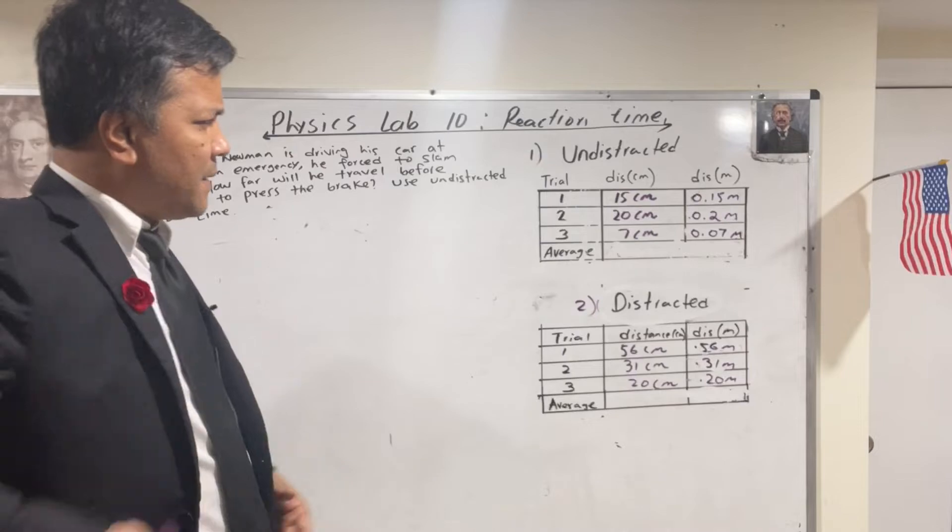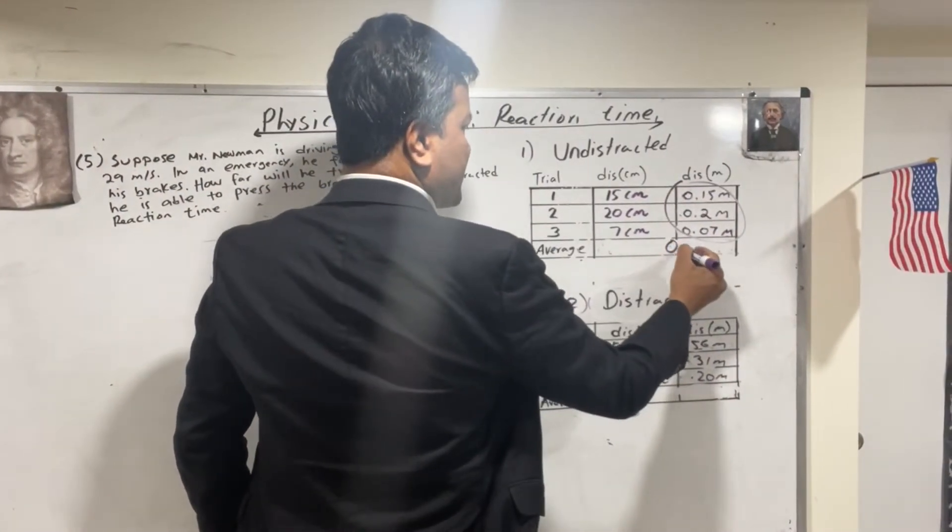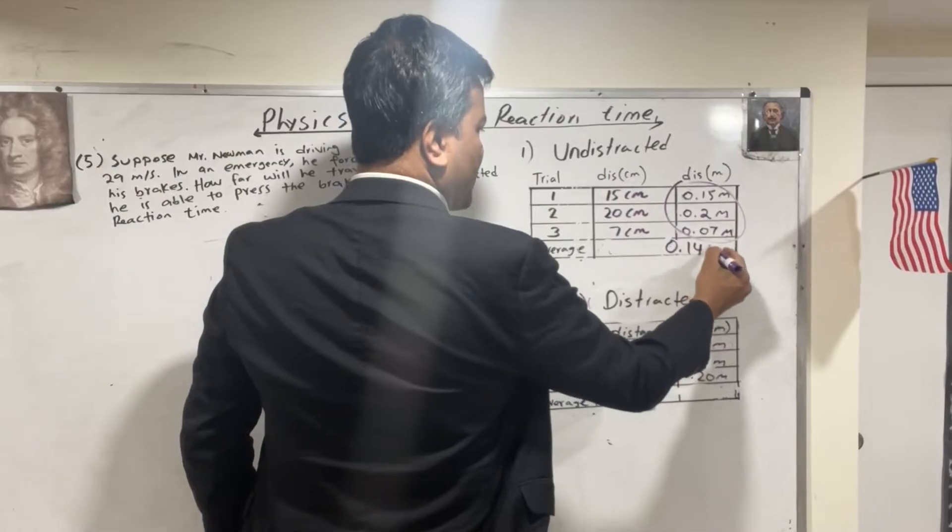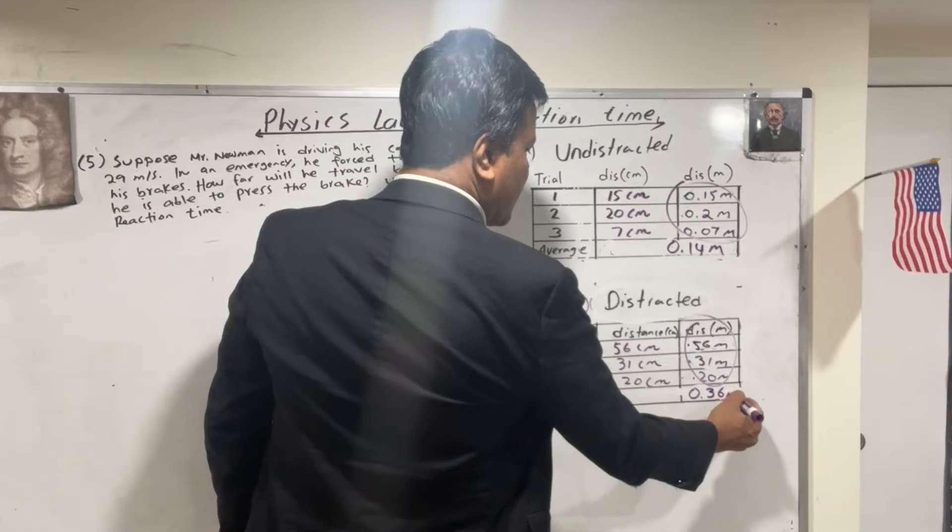The data collected. If we add them up, let's add them up and divide by three. So we're going to get 0.14 meter. And let's add them up and divide by three. We're going to get 0.36 meter.